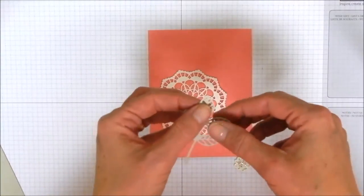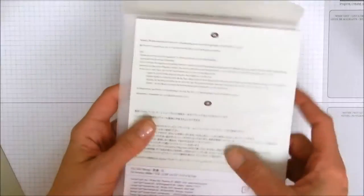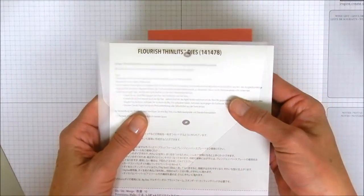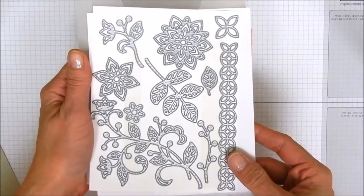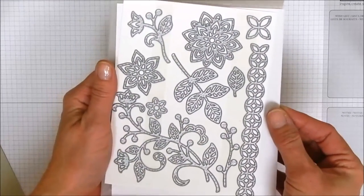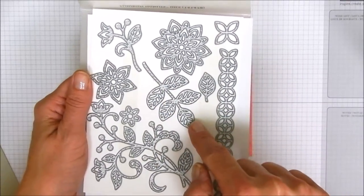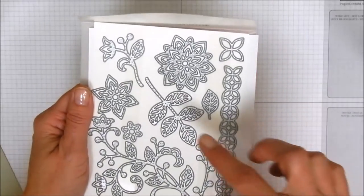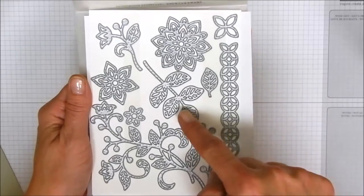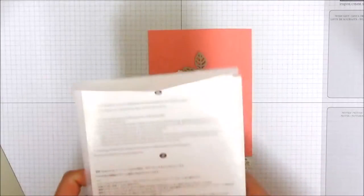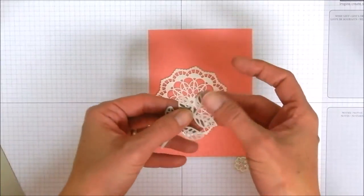And this little guy is actually a die from the Flourish Thinlits die set and these are just amazing in the annual catalog and if you don't have these, these are a must-have for your next order. You're going to want to use the precision base plate on your Big Shot die cutting machine when you cut these out because there's lots of little pieces. As you can see they are very detailed when you cut them out.